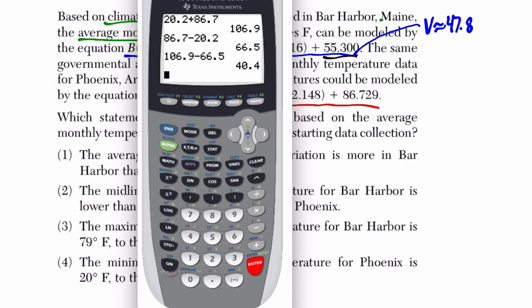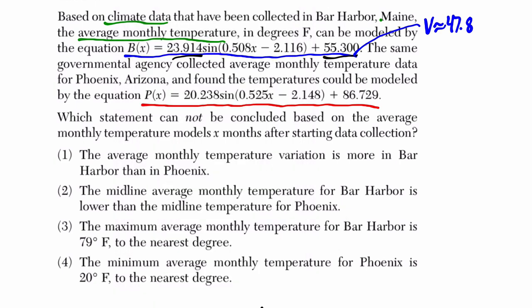That's our variation, about 40.4. Okay, so variation for Phoenix is about 40.4. And this statement says the variation is more in Bar Harbor than in Phoenix. So that's true.